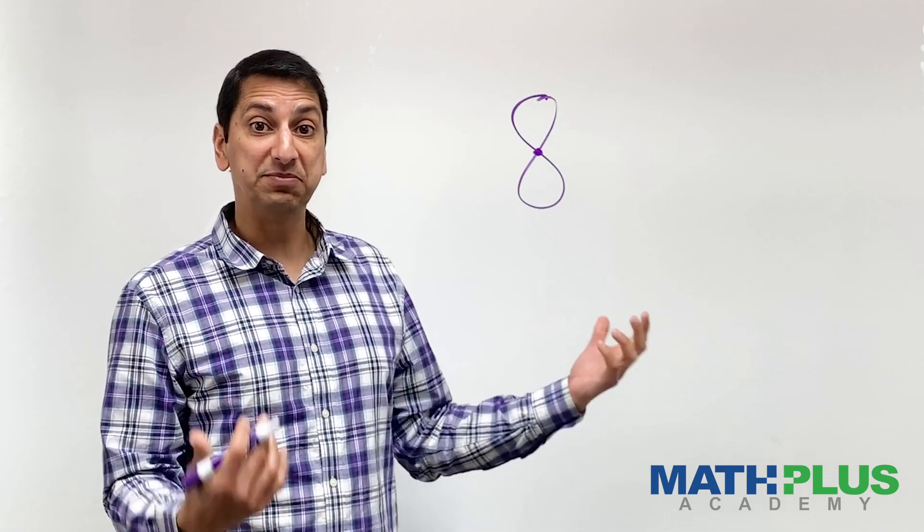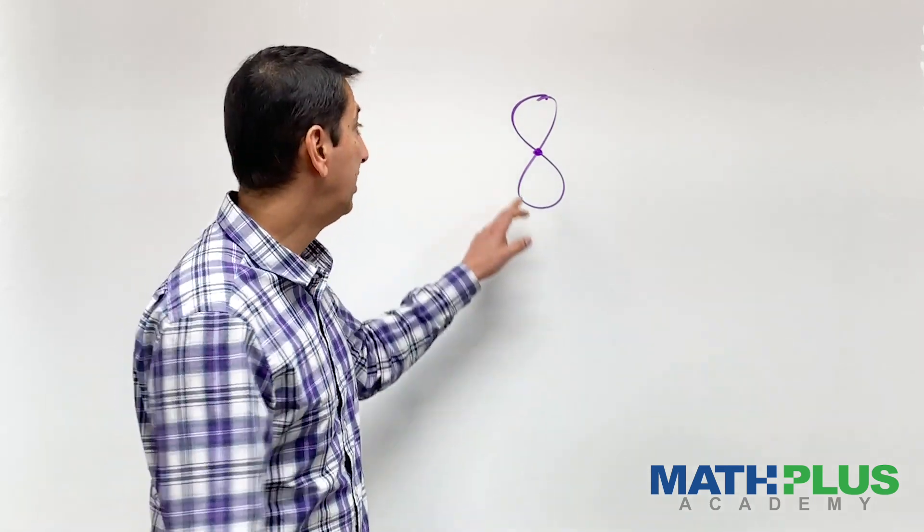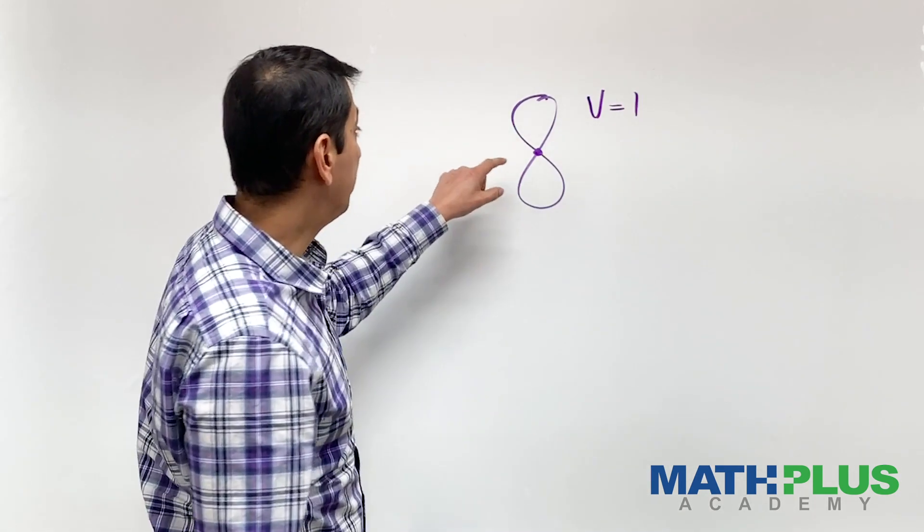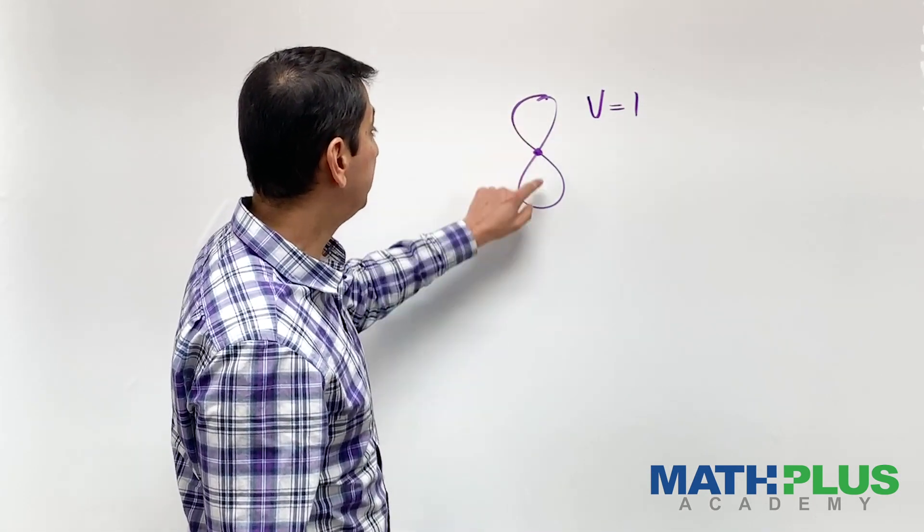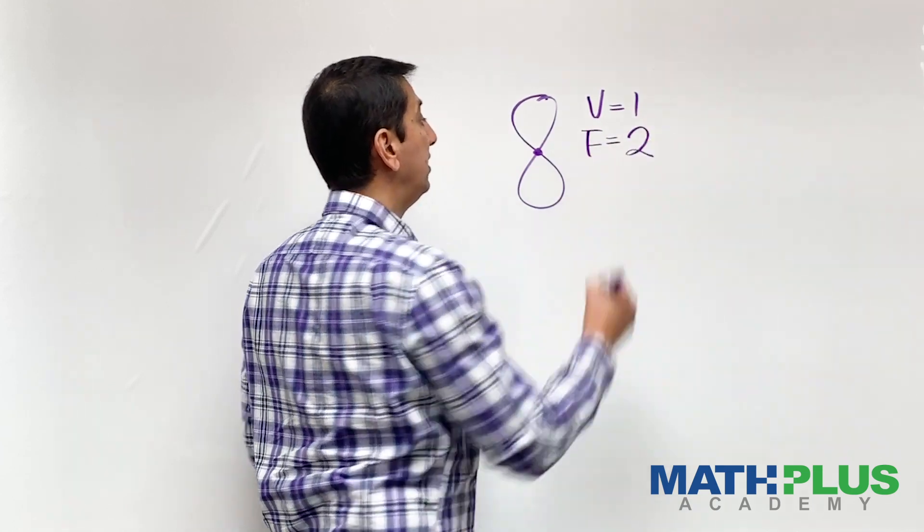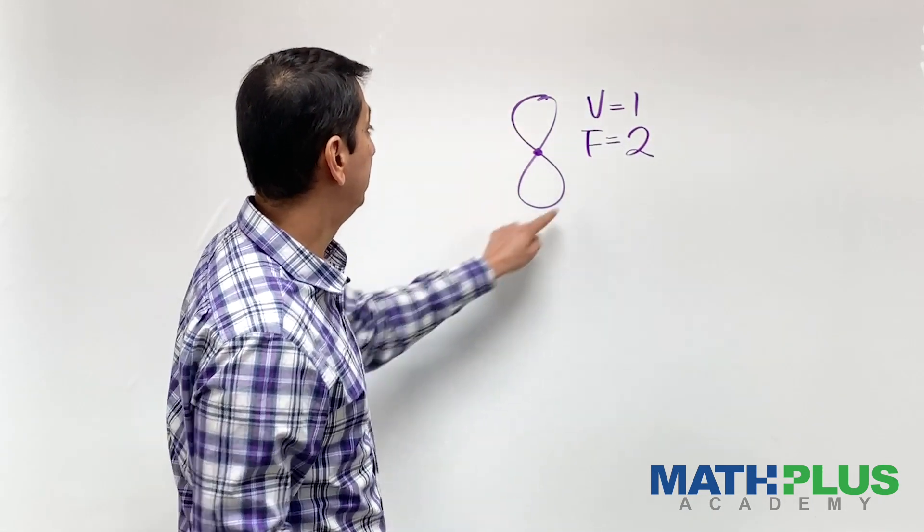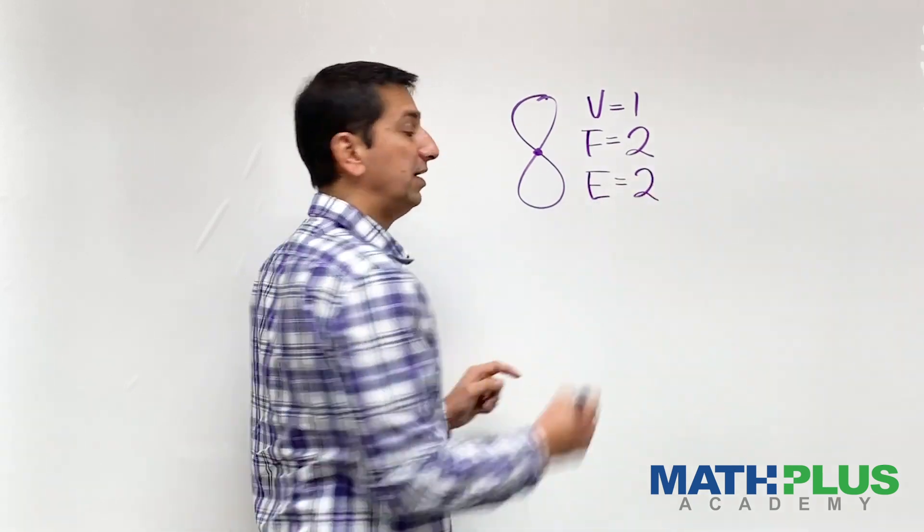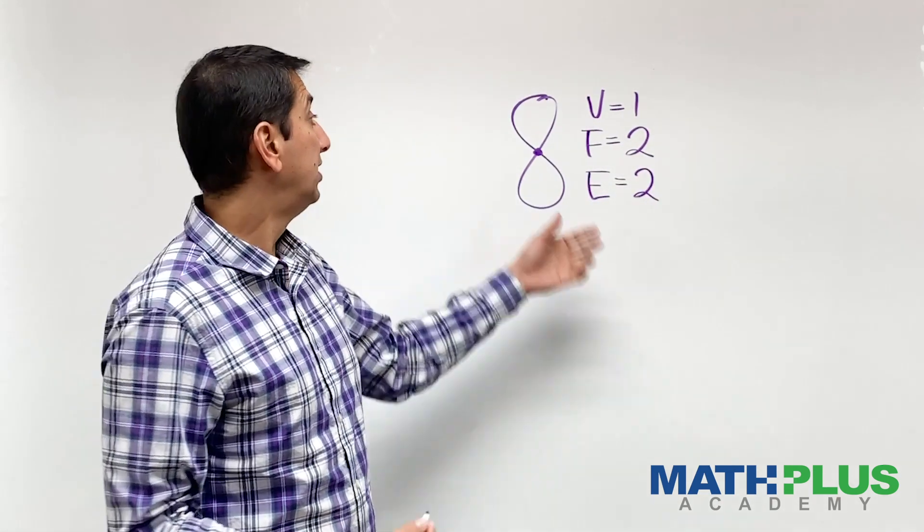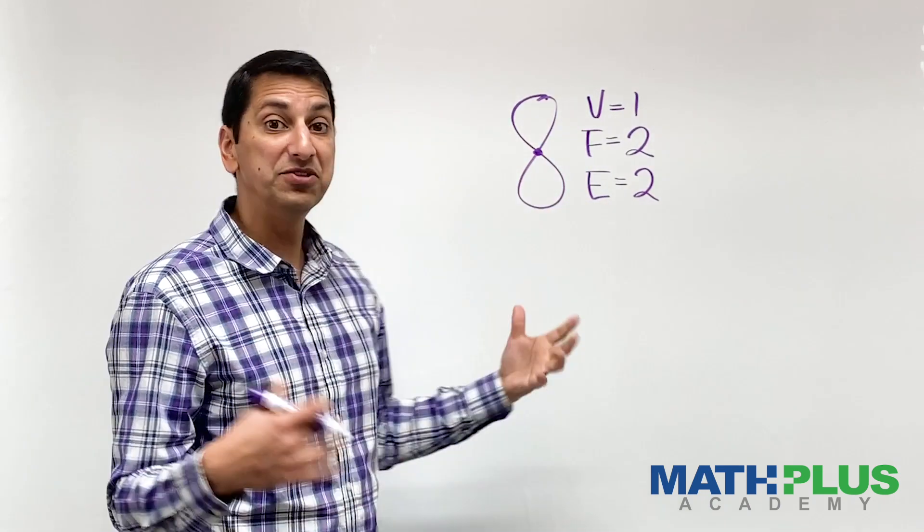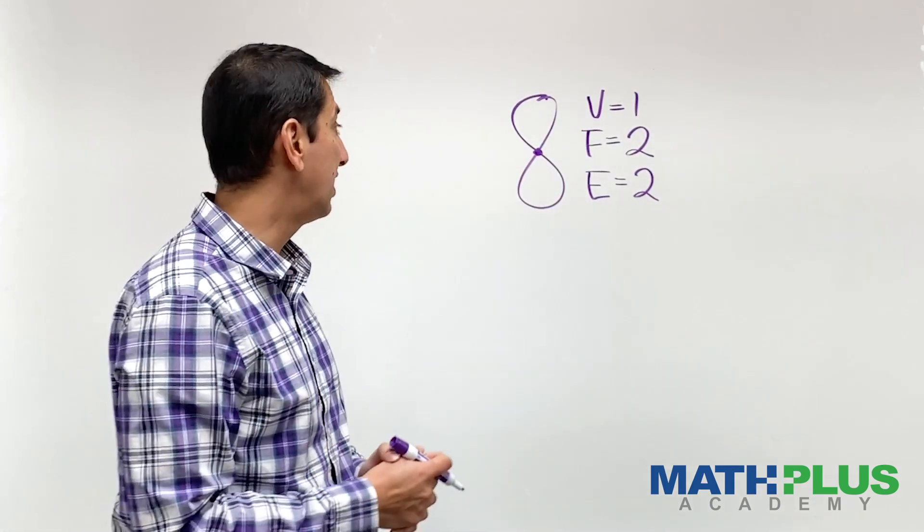That to me is a fairly easy place to start. Super easy to count. I've got one vertex, I've got one face here and one face there. And I have two edges, one, two. And indeed when you look at this, vertices plus faces is three minus edges is one. It follows that rule, the mystery that we've been investigating. But we still don't really know why.